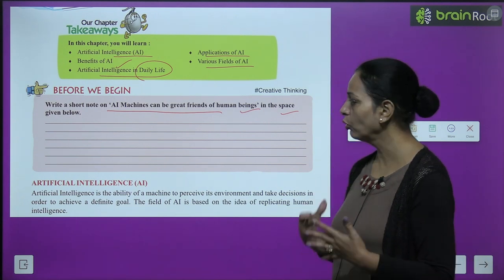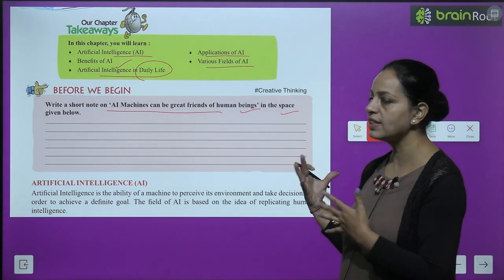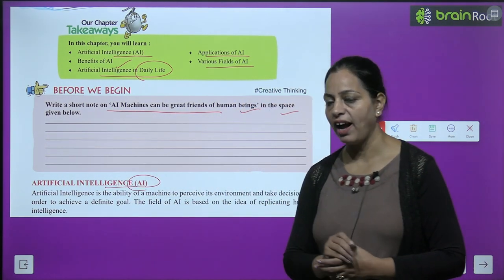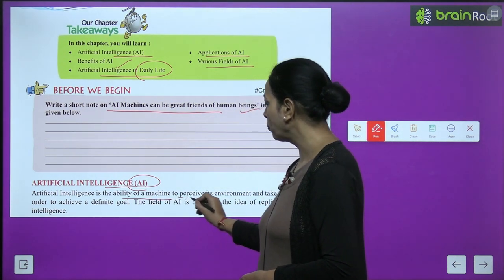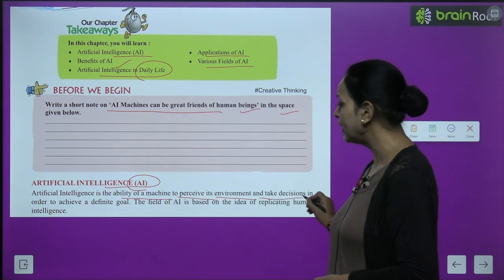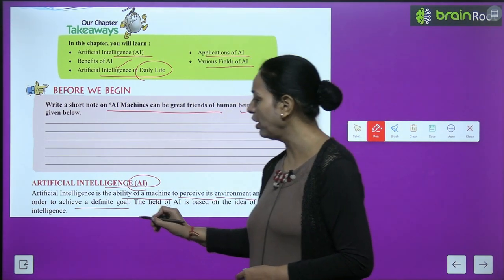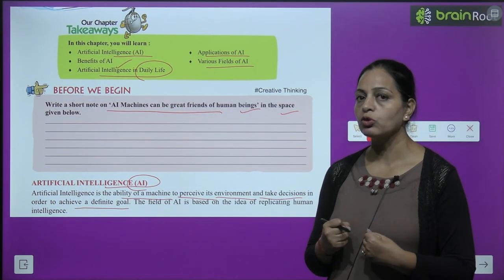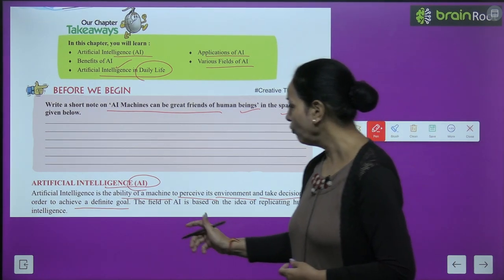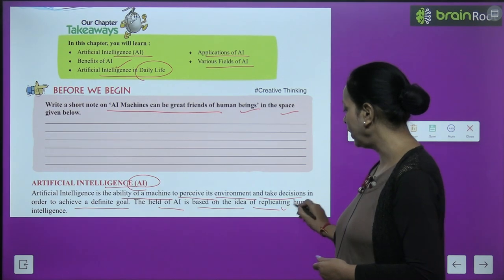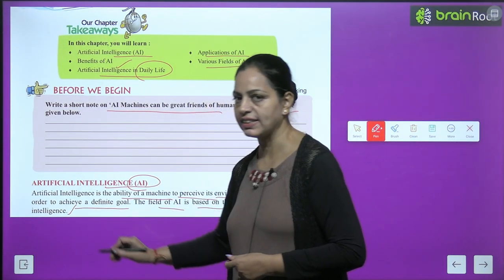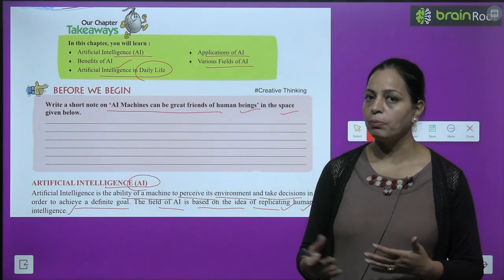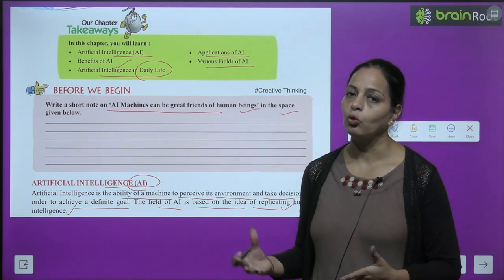When you go through this chapter, it would be more clear to you, to aapko easily you can write in your own language. Artificial intelligence means AI — it is the ability of a machine to perceive its environment and take decisions in order to achieve a definite goal. The field of AI is based on the idea of replicating human intelligence. Jaise hum human being mein brain hota hai, hum apne brain ko use karte hai apne task ko complete karne ke liye — aise hi it is working like a human brain.